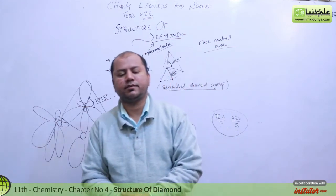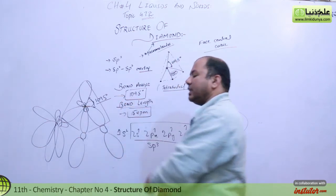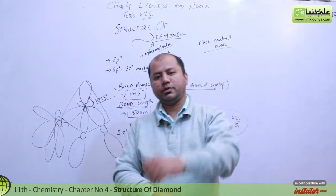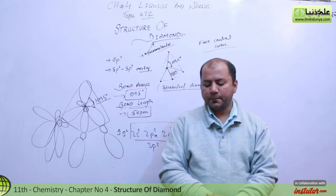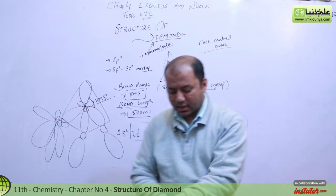You can get two marks from the examiner to explain the structure of diamond. The two important things are bond angle and bond length. Thank you so much for this time.